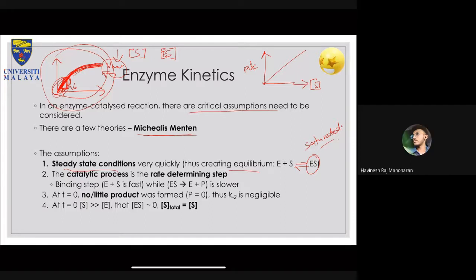That's why we assume a steady-state condition even though in reality it's very difficult to achieve true equilibrium for enzyme kinetics. There's always a tendency for the enzyme to produce product. In the Michaelis-Menten equation, the first assumption is a steady-state condition — no change in temperature, no change in pressure — and of course the enzyme can be regenerated 100%.